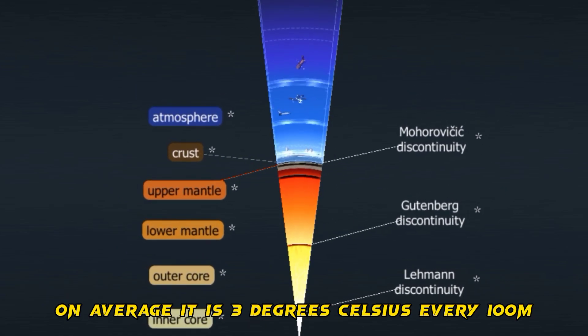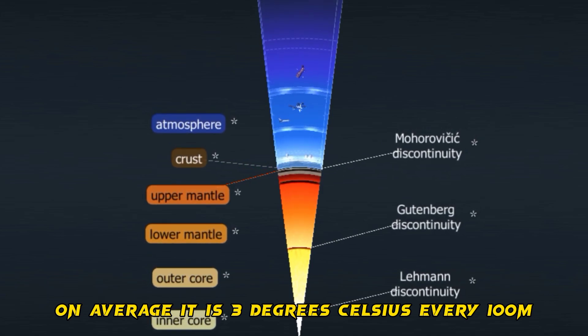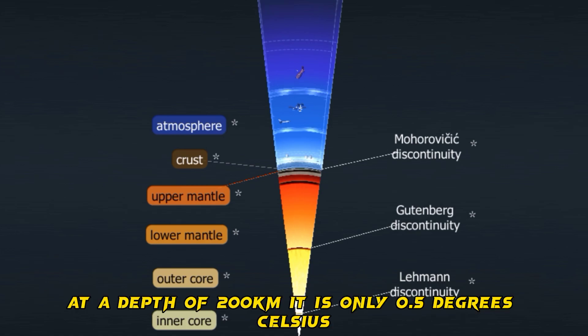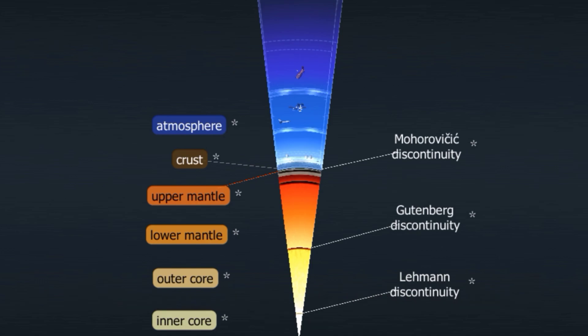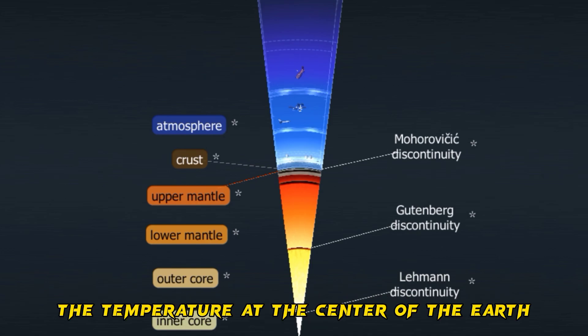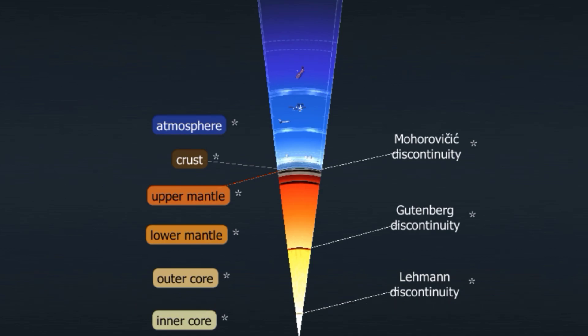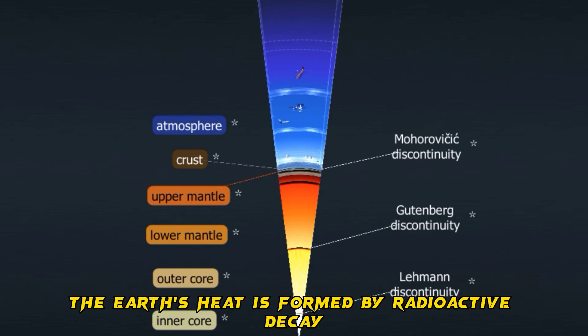The rate of inner temperature increase is called the geothermal gradient. On average, it is 3 degrees Celsius every 100 meters, but it decreases with depth. At a depth of 200 kilometers, it is only 0.5 degrees Celsius. The temperature at the center of the Earth is around 5,000 to 6,000 degrees Celsius. The Earth's heat is formed by radioactive decay.